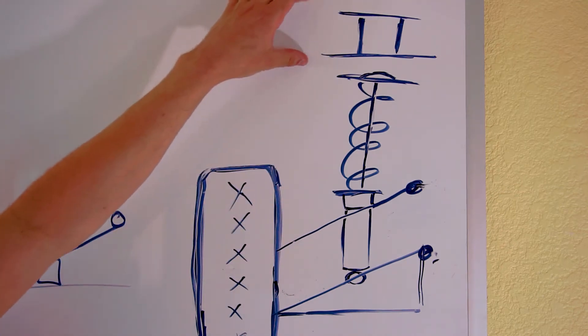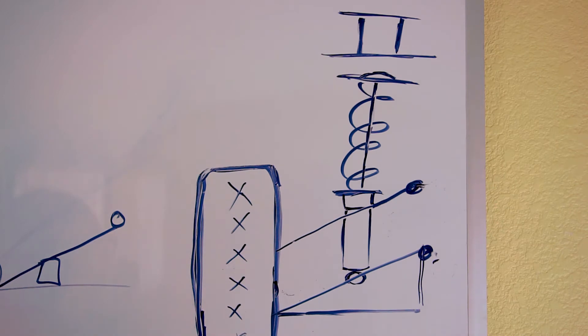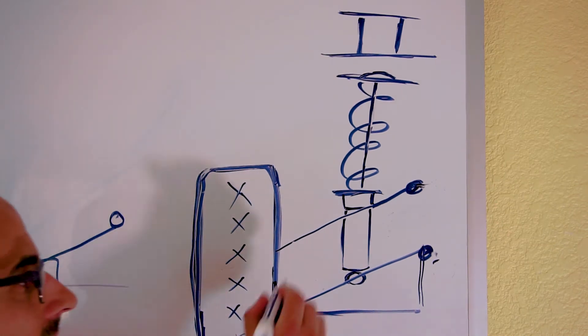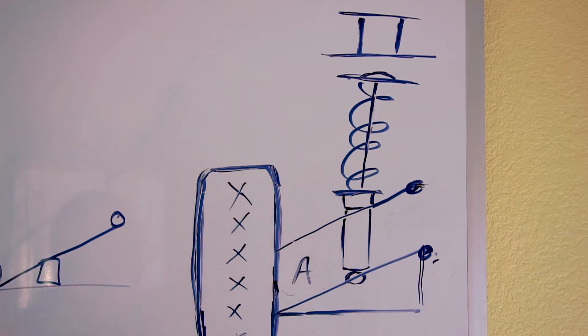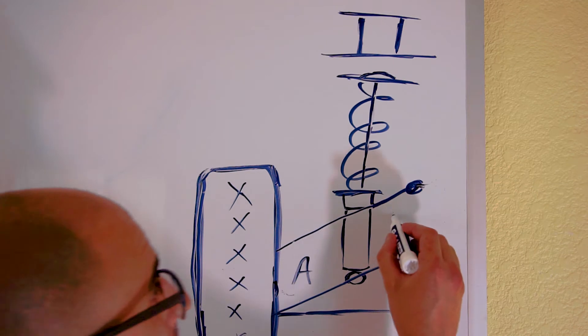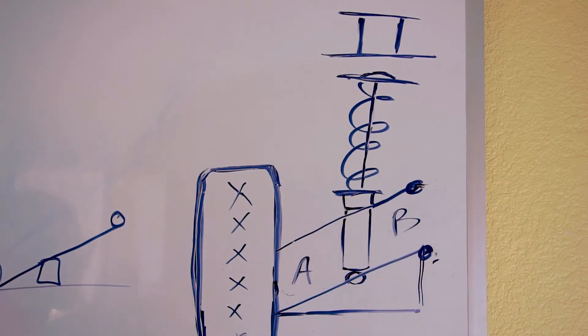When your strut spacer is properly mounted atop your strut, this will generate pressure on your lower control arm, which pivots point A on your control arms downward and points B upward. This pivot caused by the installation of your strut spacer is what will give you your three inches of lift, even though your strut spacer is an inch and a quarter to an inch and a half.